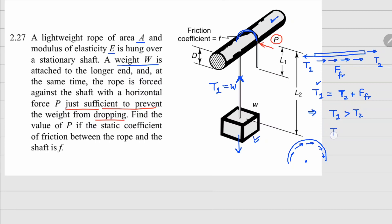That relationship is T on one side equals T on the other side times e to the power f times theta, where theta is the angle of engagement. In this case, this angle is going to be π because this is where your string is attached with the shaft.